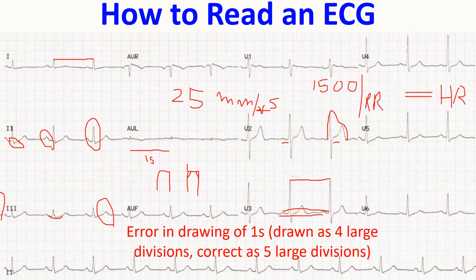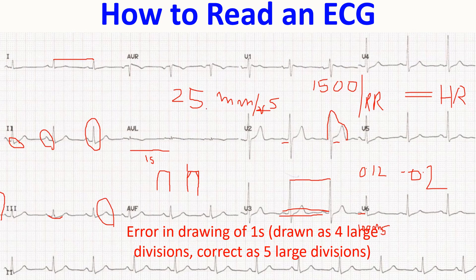You need to know the normal ranges: the PR interval is normally 0.12 to 0.2 seconds, that is 3 to 5 millimeters. The upper limit for QRS duration is two and a half small divisions, which is 100 milliseconds, since one small division at this speed corresponds to 40 milliseconds. If QRS is 120 milliseconds or more, it is considered a broad QRS.